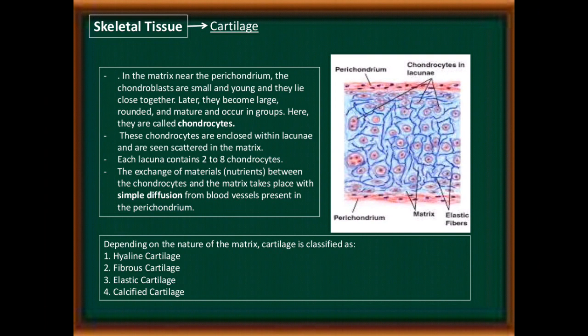These chondroblasts are enclosed within lacunae and are seen scattered in the matrix. Each lacuna contains two to eight chondrocytes. The exchange of materials — meaning nutrients — between the chondrocytes and the matrix takes place by simple diffusion from blood vessels present in the perichondrium.